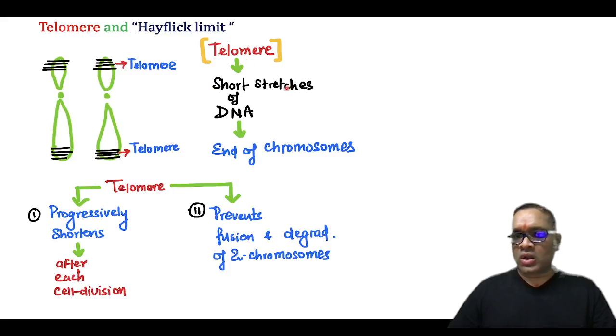So what is telomere? These are short stretches of DNA which are present at the end of the chromosome. So you can see this is the chromosome, two chromosomes, and these black lines correspond to the telomeres at the end of the chromosome.